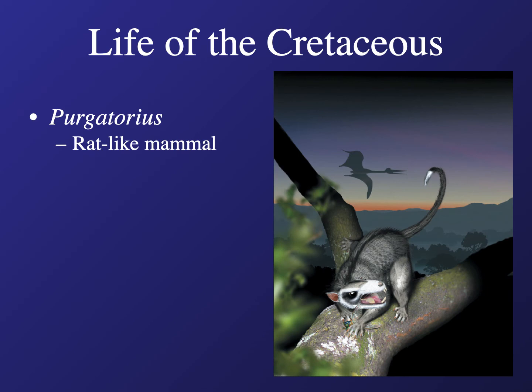Here is Purgatorius, one of the first fossil primates we find, and they're around during the Cretaceous. What did they look like? Kind of like rats that climbed trees — small rat-like creatures, probably nocturnal. You can't picture something like this scurrying around too much during the day because a dinosaur would snack on it. They were probably eating insects up in the trees. So the primates are on the scene — the stage is set.